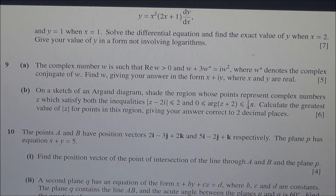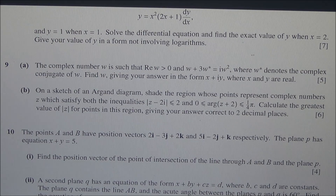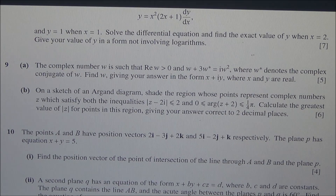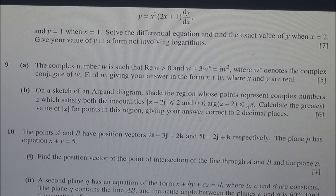Question number 9a. The complex number w is such that the real part of w is greater than 0, and w plus 3w* is equal to iw squared, where w* denotes the complex conjugate of w. Find w giving your answer in the form x plus iy, where x and y are real.